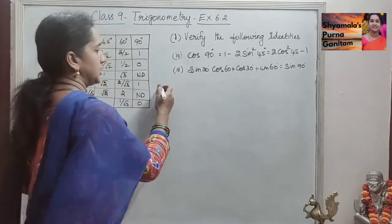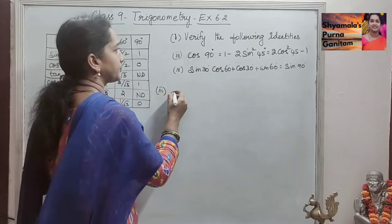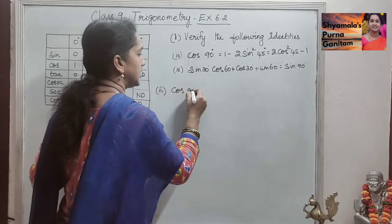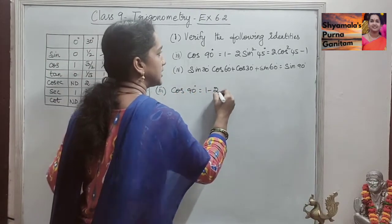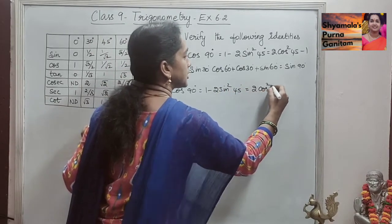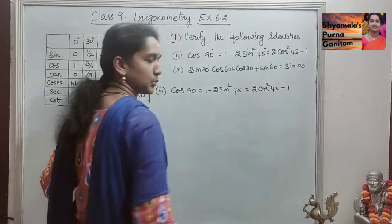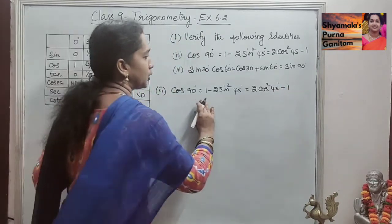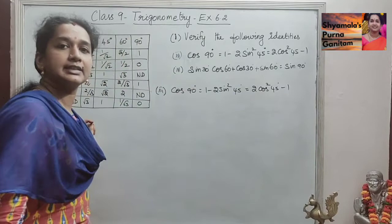3rd and 4th sum will do. So 3rd sum is cos 90° is equal to 1 minus 2 sin squared 45° is equal to 2 cos squared 45° minus 1. We have to prove that all these 3 has the same value.